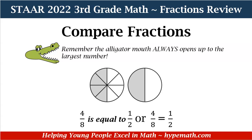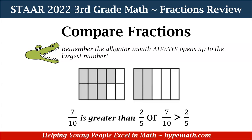Let's look at another one. Here we have two circles. The circle on the left is divided into eight equal parts — eight is our denominator — and four of them are shaded, which is our numerator, so that is four-eighths. The circle on the right is divided into two parts — two is our denominator — and one part is shaded, that is one-half. Even though they're divided into different parts, the shading is the same, so four-eighths is equal to one-half.